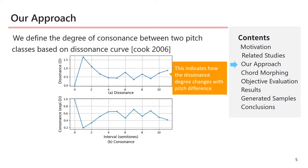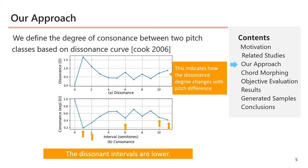Now I'd like to talk about how to reduce dissonant chords. First, we define the degree of consonance between two pitch classes, based on an interval of semitones concerning the dissonance curve. This figure shows that dissonance curves represent the degree of consonance C. Focusing on the dissonant intervals — for example, minor 2nd, major 2nd, major 7th, minor 7th, and augmented 4th — the degree is lower. In contrast, the unison and perfect 5th intervals are higher.